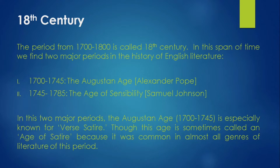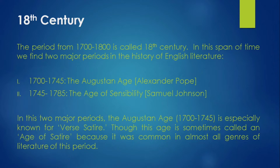The Augustan Age lasted from 1700 to 1745, and the prominent writer of this age was Alexander Pope. The second period of the 18th century, from 1745 to 1785, is known as the Age of Sensibility, in which Samuel Johnson is recognized as a major writer. Of these two periods, the Augustan Age is especially known for verse satire.